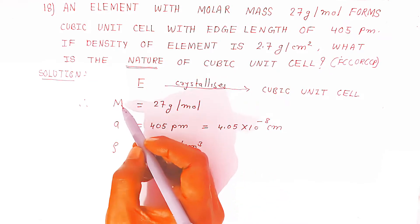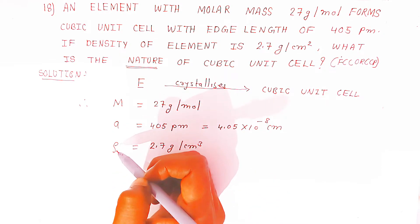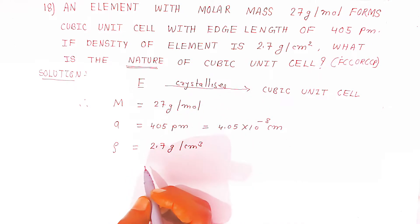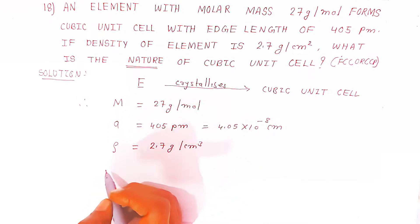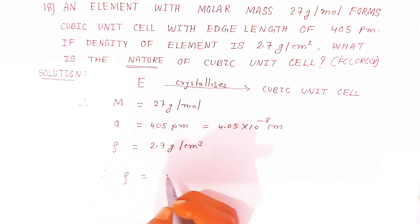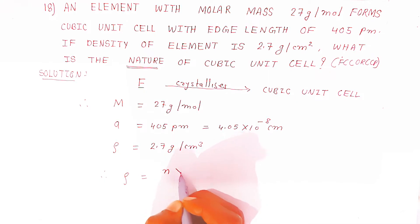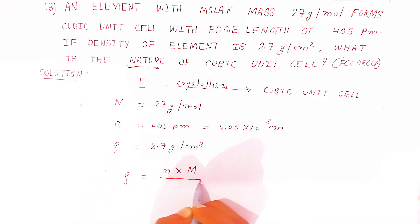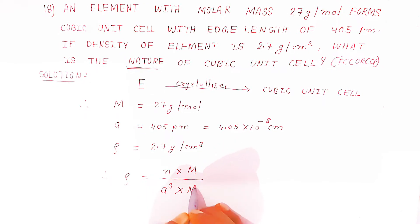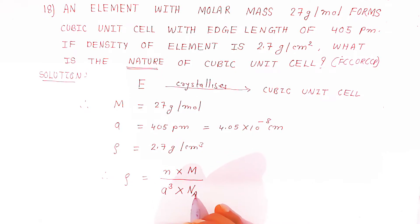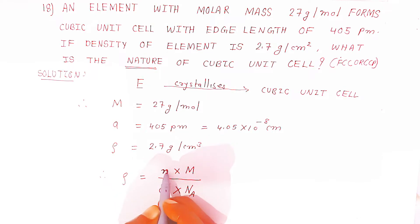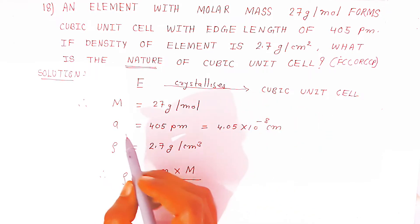We know the relation between density, number of atoms, molar mass, and Avogadro number. The formula is: rho (density) equals number of atoms (n) into molar mass (M), divided by side cube (a³) into Avogadro number (A). From this relation, we can find n, the number of elements per unit cell.